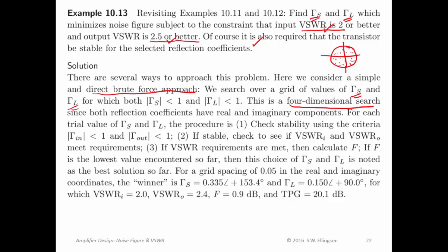For each one, you check stability. In other words, the embedded input reflection coefficient, that result should be less than one. The embedded output reflection coefficient, that result should be less than one. If it's stable, then you should check to see what the VSWR are at the input and the output and see if you meet these requirements.